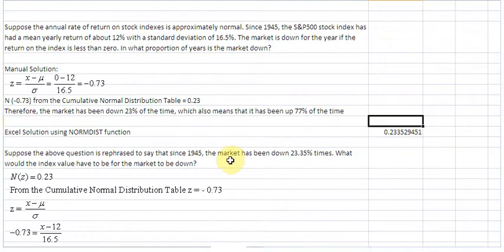Let us look at the next question, in which we worked backwards in a previous video. This is that question. Suppose the above question is rephrased to say that since 1945, the market has been down 23.35% times. Now, in this case, we know the probability already. What would the index value have to be for the market to be down? We already know the answer, that the index value would have to be 0.